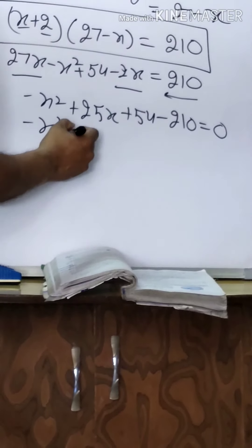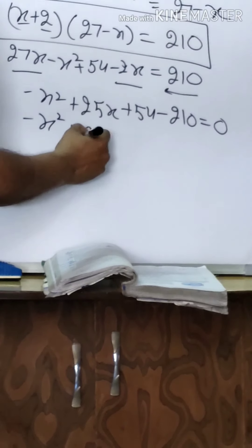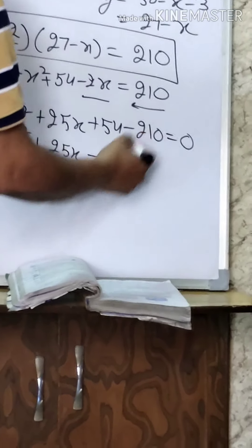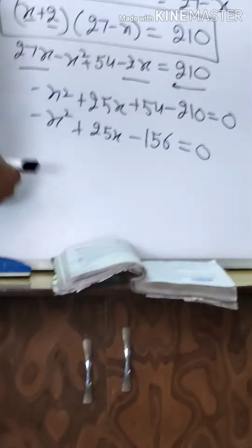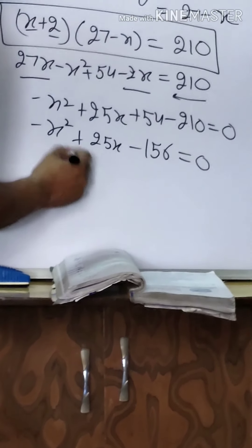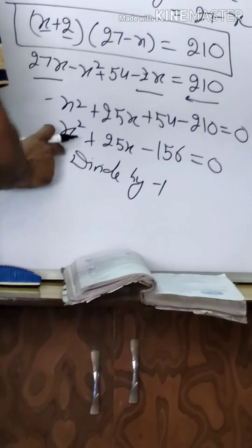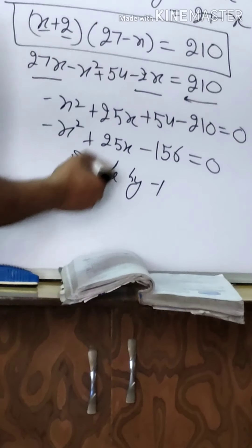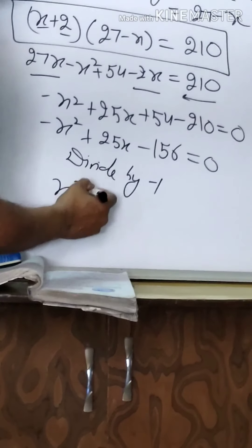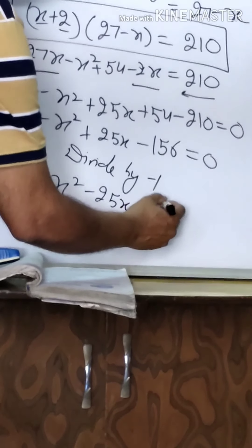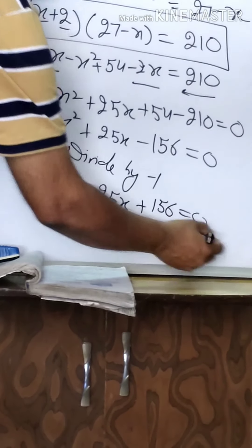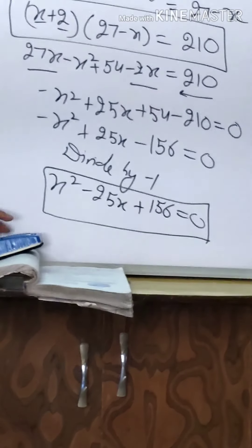So -x² + 25x - 156 = 0. Dividing by -1, we get x² - 25x + 156 = 0. This is the quadratic equation.